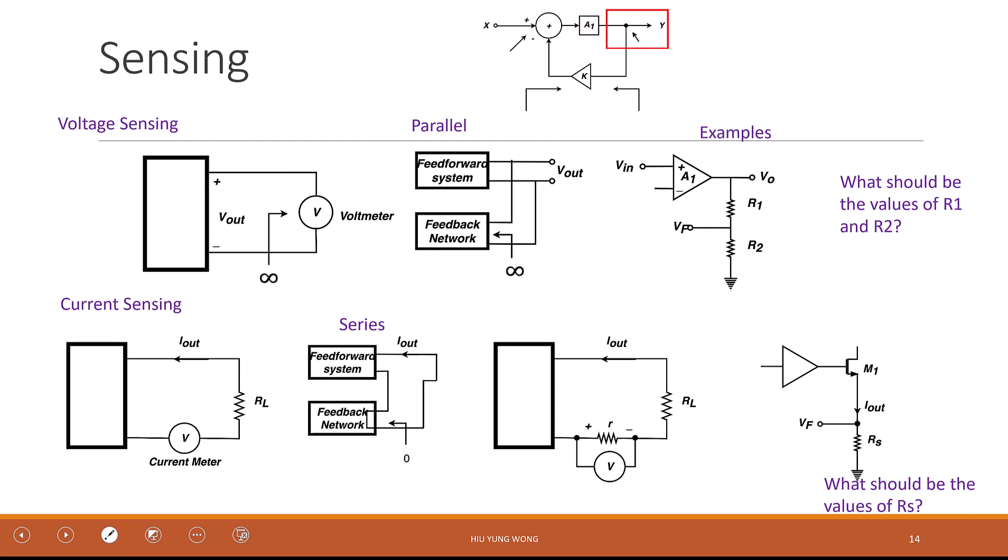Moving forward, now we know the general features of the feedback amplifier: the gain is reduced, the bandwidth is increased, and the impedance input-output will modify according to the types of the amplifier. But they all are adjusted by 1 plus kA. The magic term 1 plus kA - always remember this term.